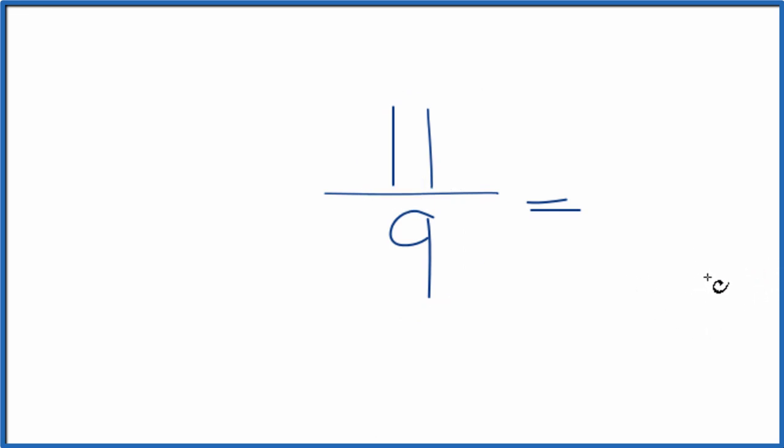So we need to find a common factor, something that goes into both 11 and 9 evenly. The thing is, the only number that can be evenly divided into 11 and 9 is 1.